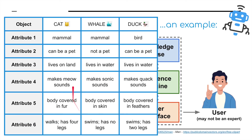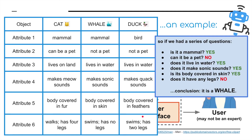We have a database table here with objects — a cat, a whale, and a duck — and the attributes of these. A cat and a whale are both mammals, and a duck is a type of bird. The whale and the duck both swim, but the whale has no legs and the duck has two legs. If we ask the expert system a series of questions: Is it a mammal? Yes — so it's either a cat or a whale. Can it be a pet? No — so it must be a whale. Does it live in water? Yes. Does it make sonic sounds? Yes. Is it covered in skin? Yes. Does it have legs? No. Therefore, the conclusion from the expert system is that this is a whale.